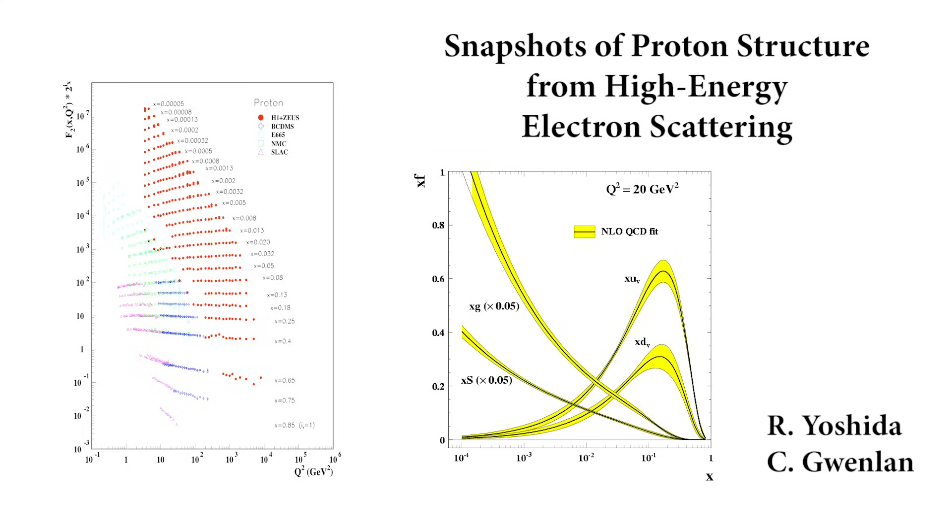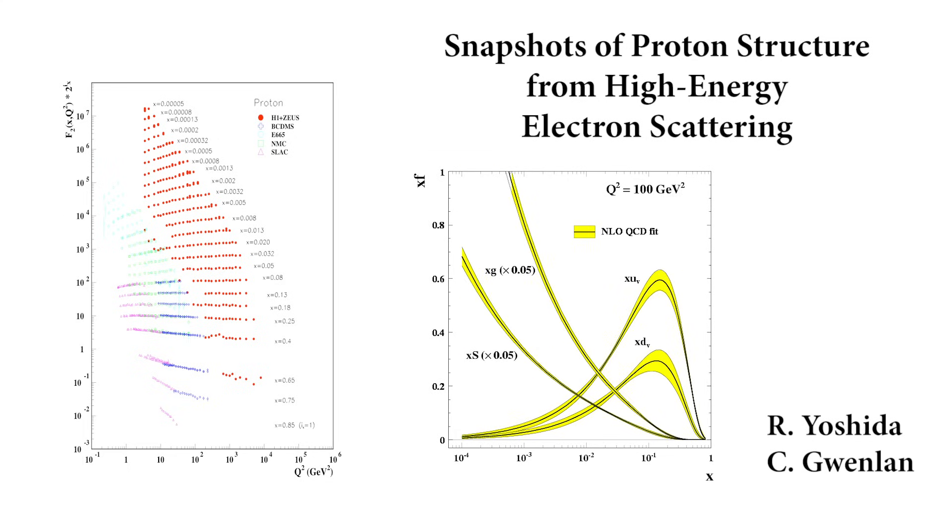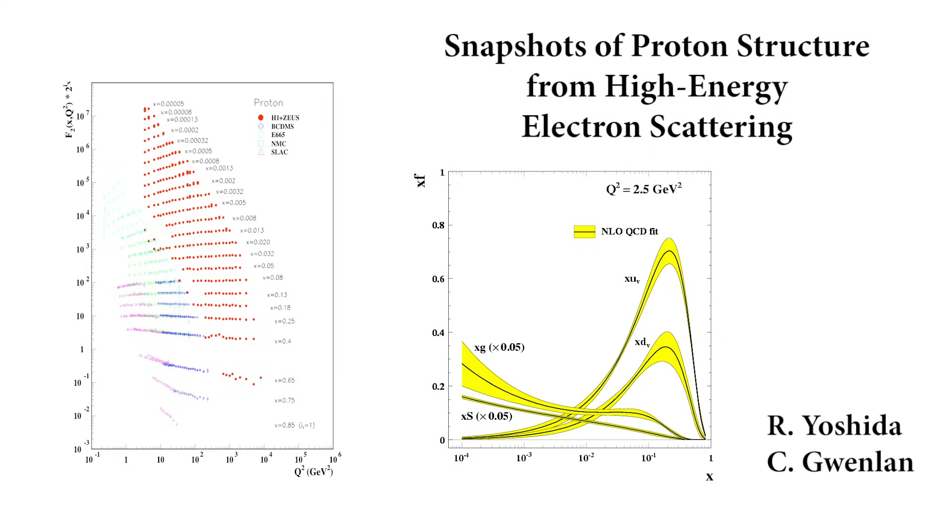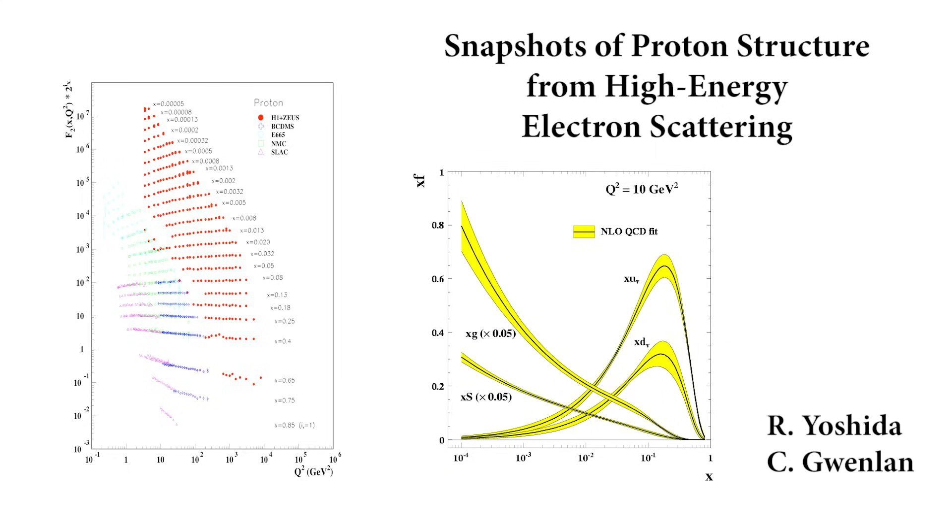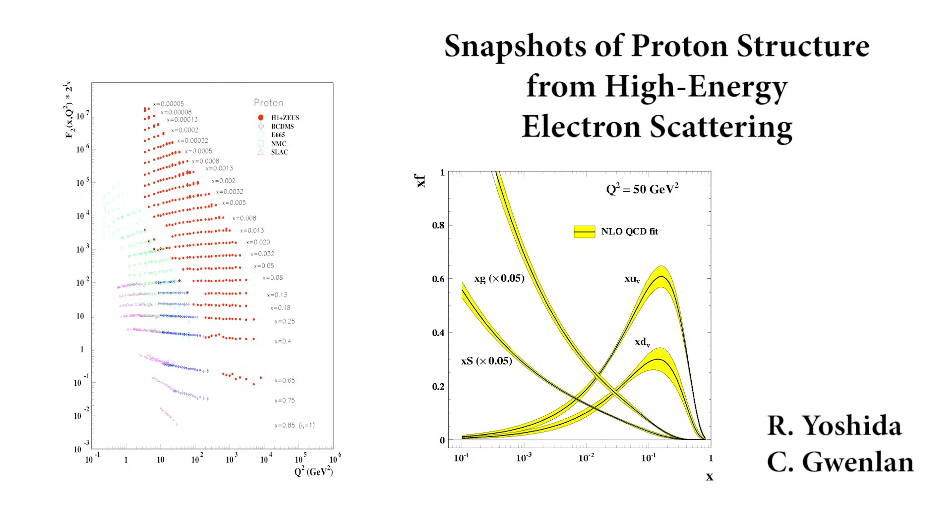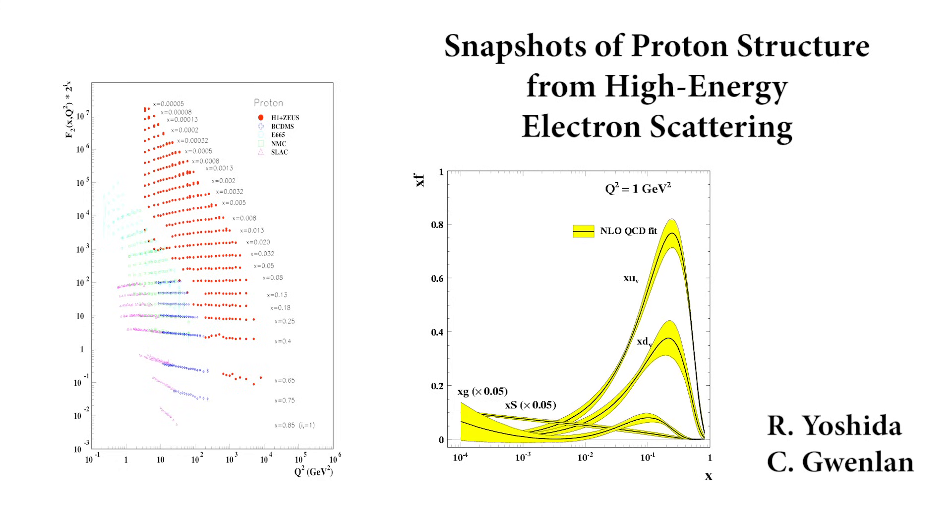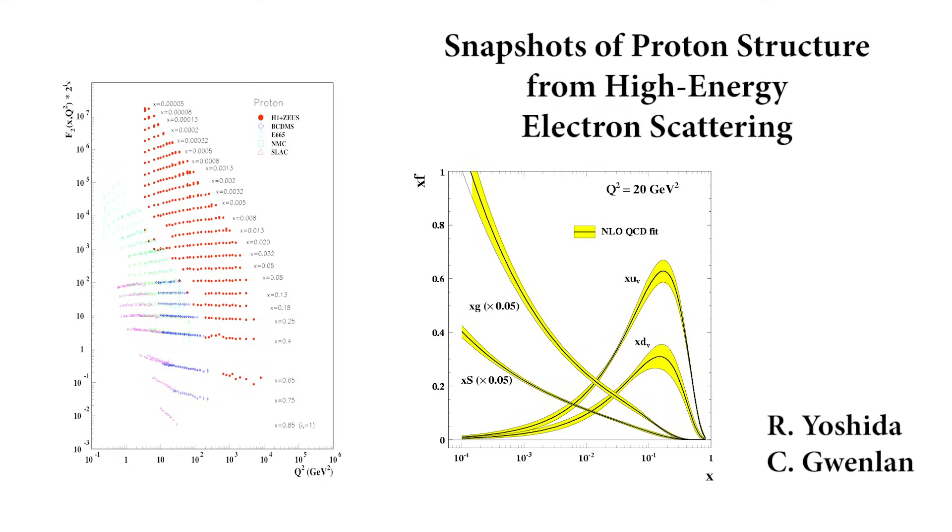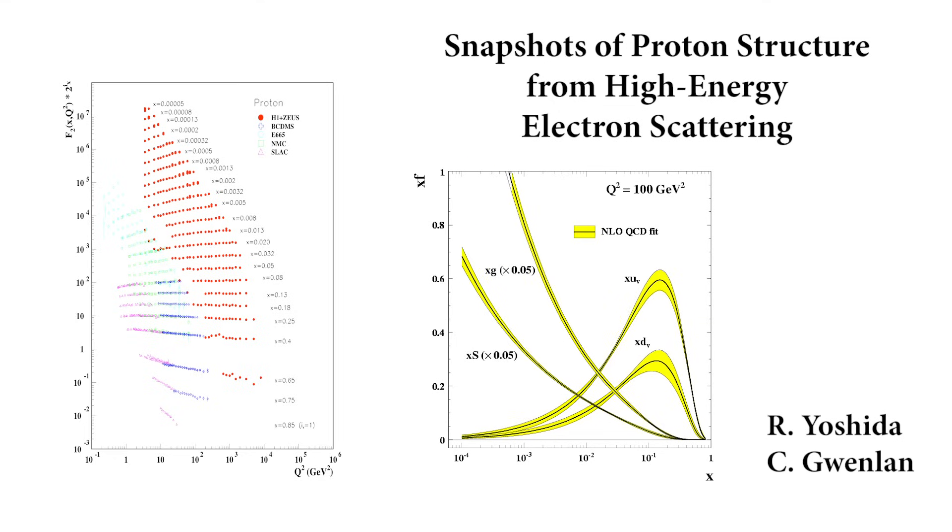QCD prescribes an evolution with Q², which connects quarks and gluons. The animation shows the quark and gluon momentum distributions derived from these data. Note that the gluon, G, and C quark, S, distributions are reduced by a factor of 20 in these graphs.